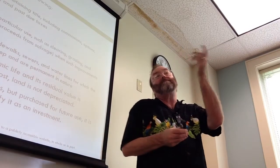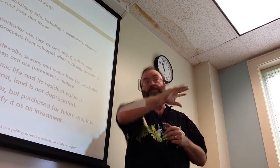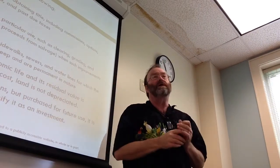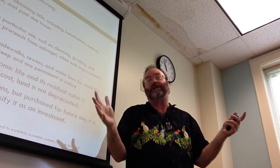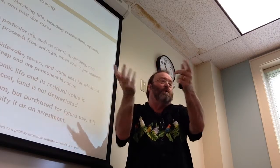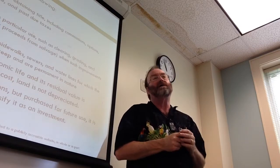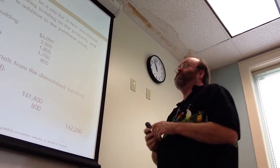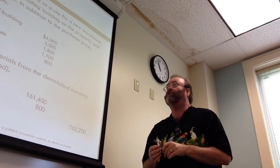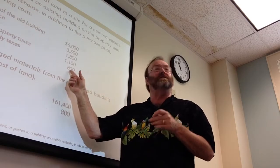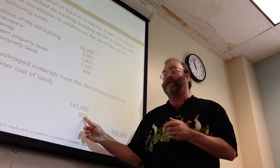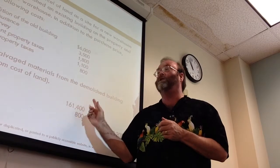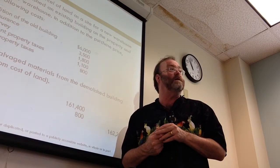You net out any salvage proceeds — a lot of times with old buildings, a salvage company will pay you to pull the copper wiring out and sell it for scrap. So if you paid $10,000 to demolish it but got $9,000 in scrap, you include the net. Here's an example: you spent $150,000, paid $3,500 for title insurance, surveyed the land, and delinquent taxes were $1,100. The current year's taxes is the only thing that gets expensed — that's just property tax expense, a normal operating expense. Everything else goes into the capitalization of the land.